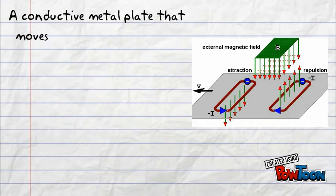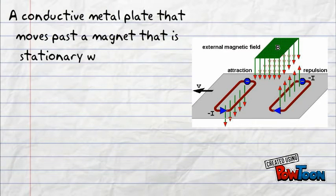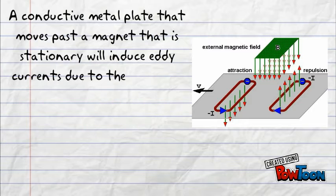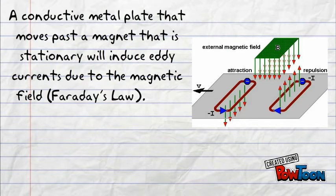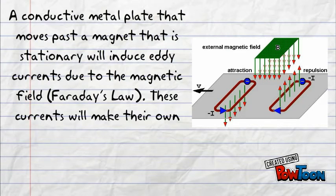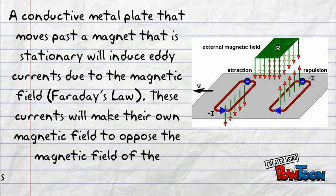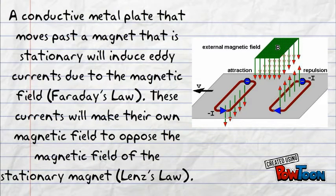A conductive metal plate that moves past a stationary magnet will induce eddy current due to the magnetic field, Faraday's law. These currents will make their own magnetic field to oppose the magnetic field of the stationary magnet, Lenz's law.